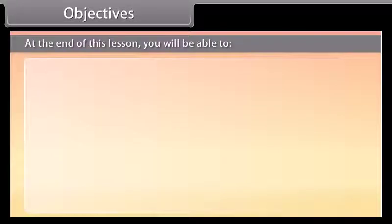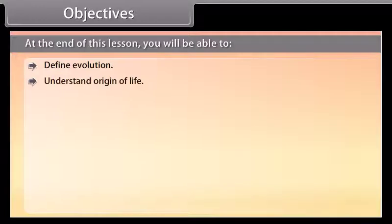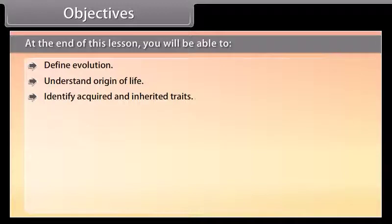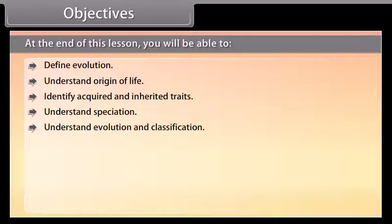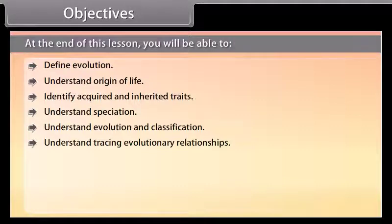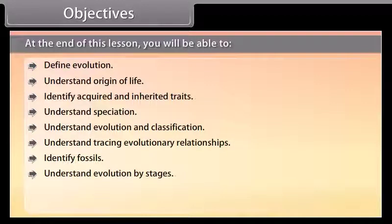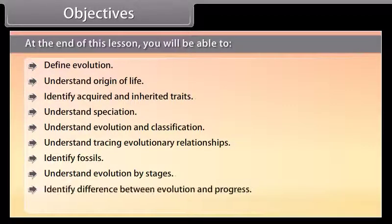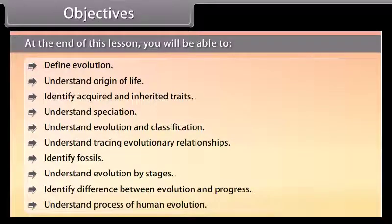Objectives: At the end of this lesson, you'll be able to define evolution, understand origin of life, identify acquired and inherited traits, understand speciation, evolution and classification, tracing evolutionary relationships, identify fossils, understand evolution by stages, identify difference between evolution and progress, and understand the process of human evolution.